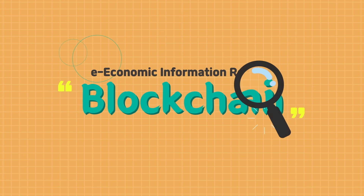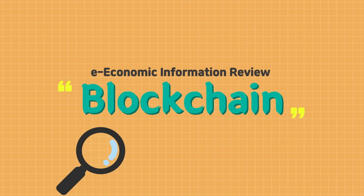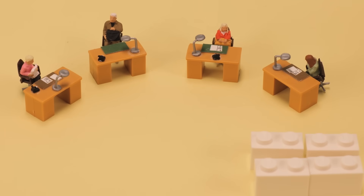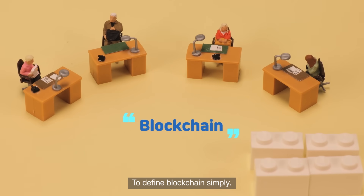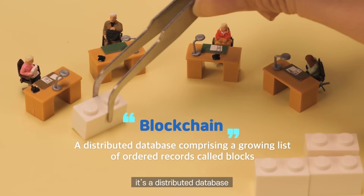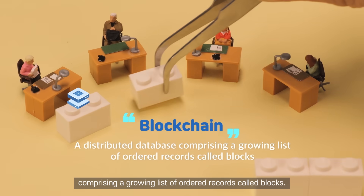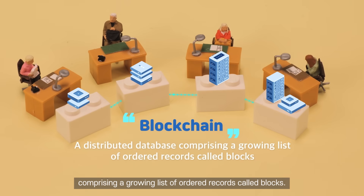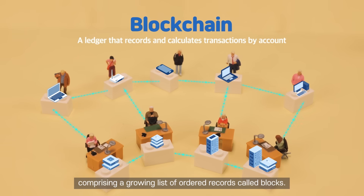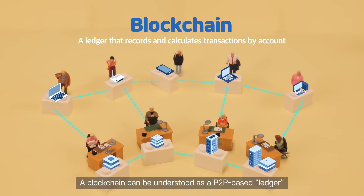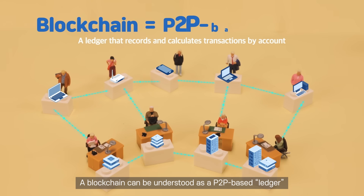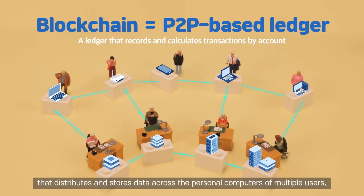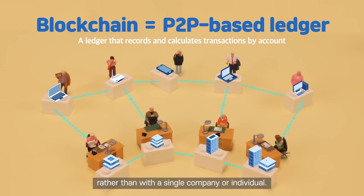E-Economic Information Review – Blockchain. To define blockchain simply, it's a distributed database comprising a growing list of ordered records called blocks. A blockchain can be understood as a P2P-based ledger that distributes and stores data across the personal computers of multiple users rather than a single company or individual.